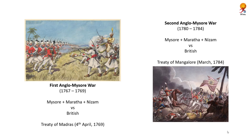The Second Anglo-Mysore War lasted between 1780 and 1784. With the British refusing aid during a Maratha attack in 1771, Haidar Ali changed alliances to the French and forged an anti-English alliance with the Marathas and the Nizam again. In November 1781, he was defeated by the English, and in 1782 Haidar Ali died of cancer. Fed up with the inconclusive battles, his son Tipu Sultan signed the Treaty of Mangalore with the British in March 1784.